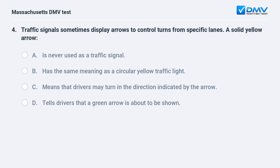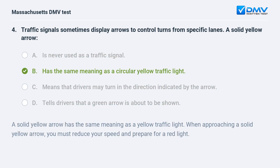Traffic signals sometimes display arrows to control turns from specific lanes. A solid yellow arrow: a. is never used as a traffic signal. b. has the same meaning as a circular yellow traffic light. c. means that drivers may turn in the direction indicated by the arrow. d. tells drivers that a green arrow is about to be shown.